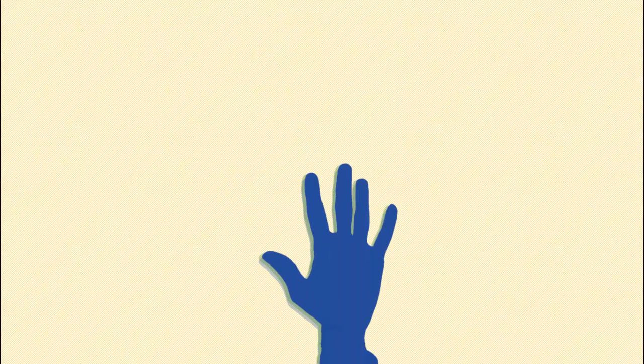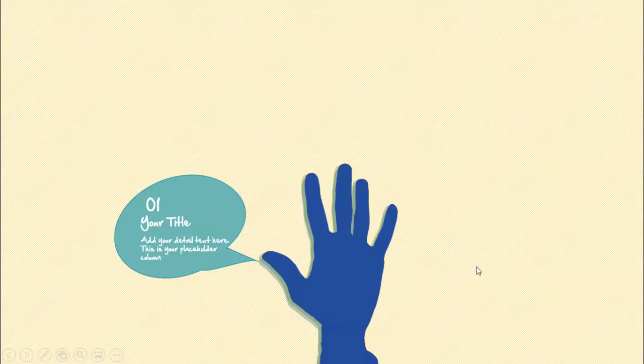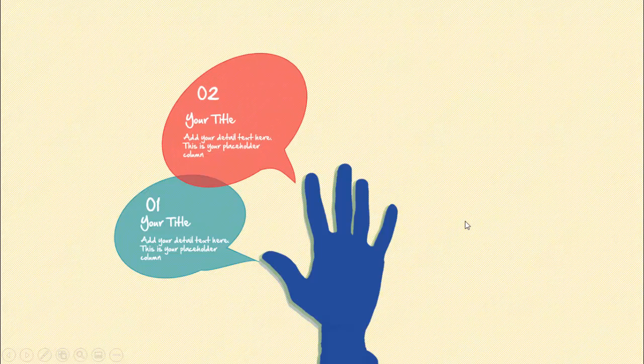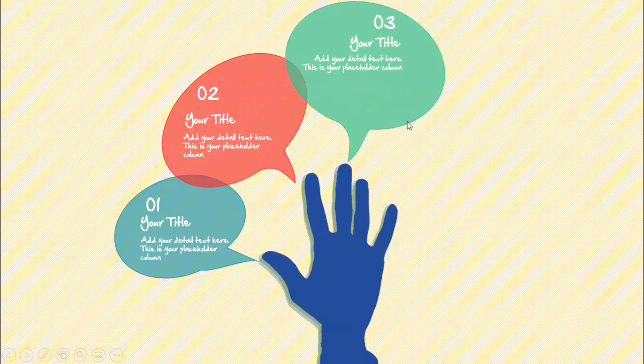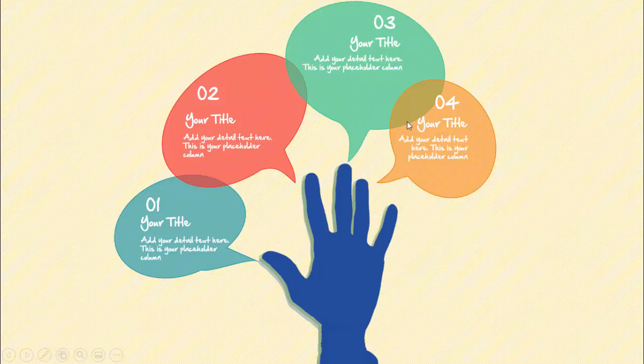In today's tutorial I'm going to show you how to create a five-finger options infographic slide in PowerPoint. This is how the slide works: when you click, the hand comes in, then the first option appears with the option number, title, and detailed text, followed by callouts for the second, third, fourth, and fifth fingers.